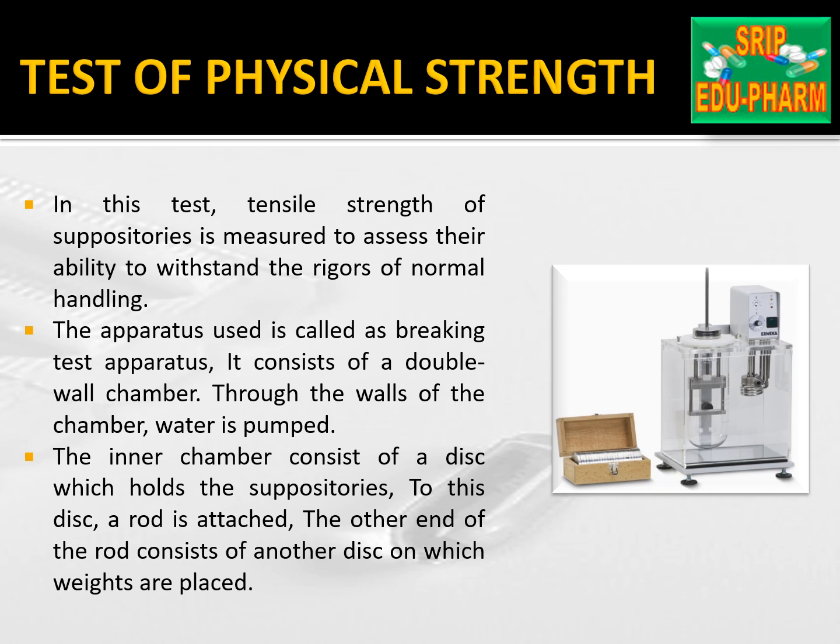6. Test of physical stress. In this test, the tensile strength of suppositories is measured to assess their ability to withstand the rigors of normal handling. The apparatus is called the breaking test apparatus. It consists of a double-walled chamber through which water is pumped. The inner chamber consists of a disc which holds the suppositories. A rod is attached to this disc, and the other end of the rod consists of another disc on which weights are placed.